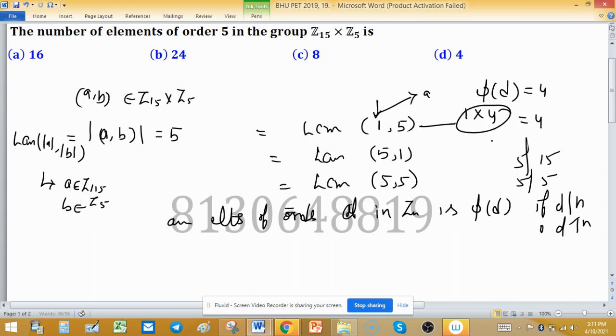For order (5,1): 4 elements × 1 identity element = 4 again. And for (5,5): 4 × 4 = 16 elements. So 16 + 4 + 4 gives us 24 elements total.